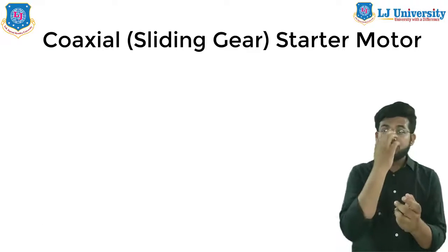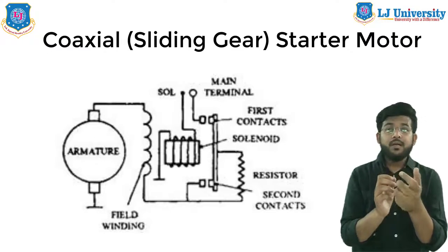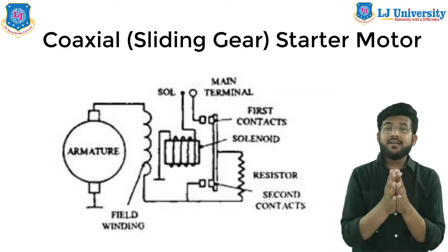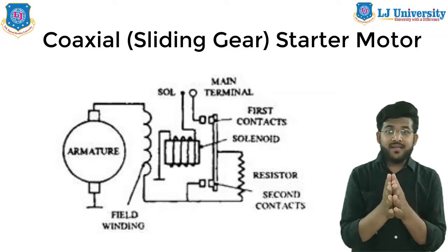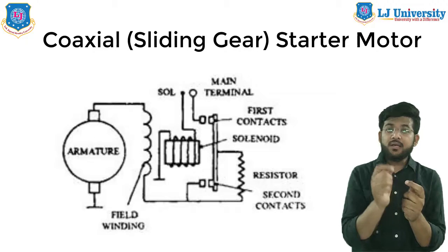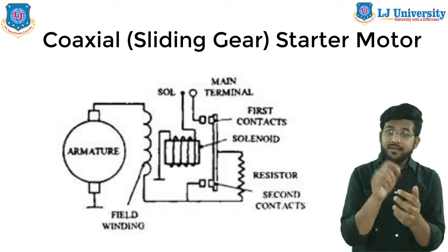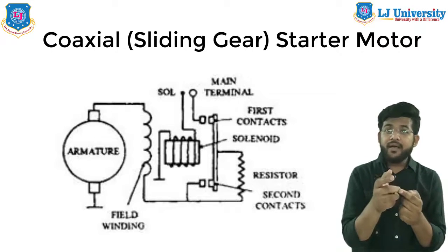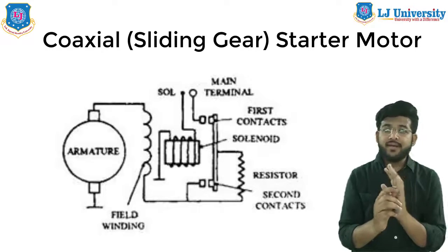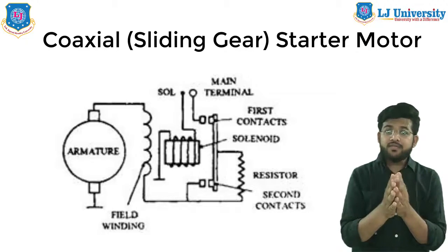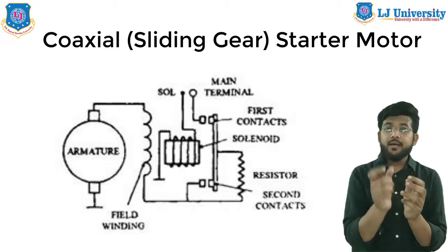The second type is the coaxial, or sliding gear type, starter motor. This motor is similar to the axial starter motor, but the coaxial starter motor moves the pinion into engagement under reduced power. Only when it is fully meshed is full power applied. The main difference is in the method of sliding the pinion into mesh with the ring gear. Instead of the whole armature assembly moving, a solenoid mounted coaxially with the shaft moves only the pinion for engagement.